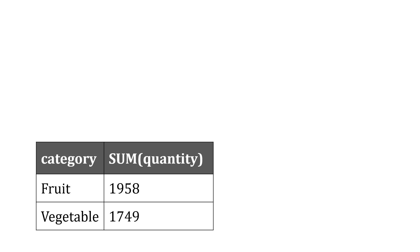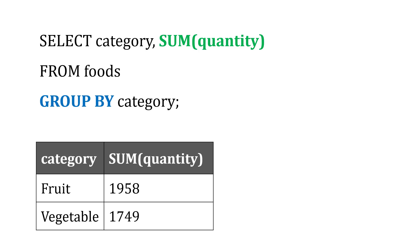We can use GROUP BY to help with this. We say SELECT the category and SUM the quantity — the amount of items we have — FROM the foods table, and then GROUP BY the category. We're selecting the category and grouping by the category.